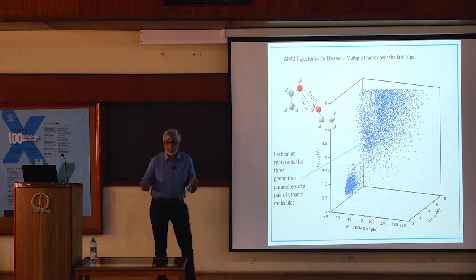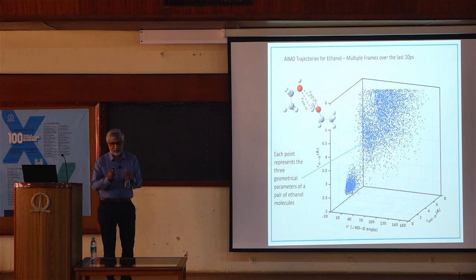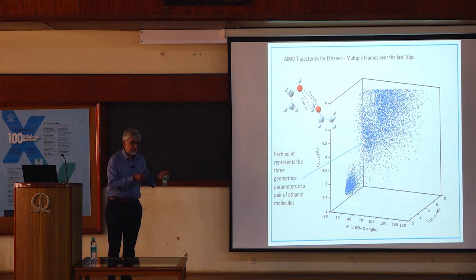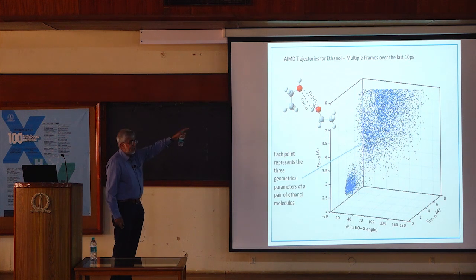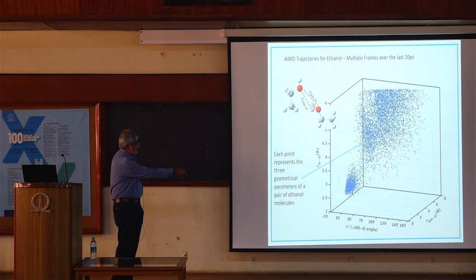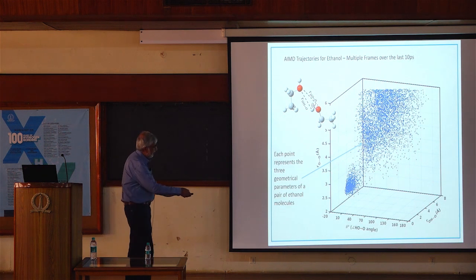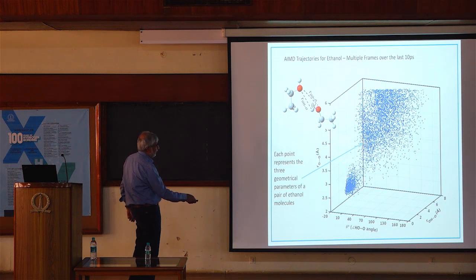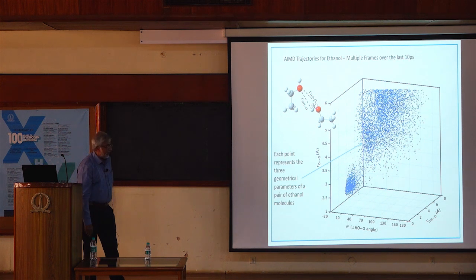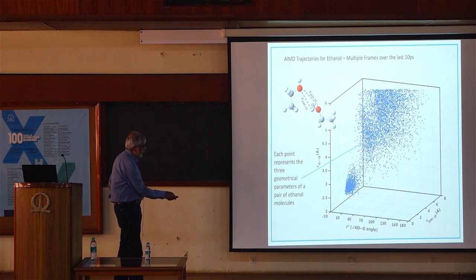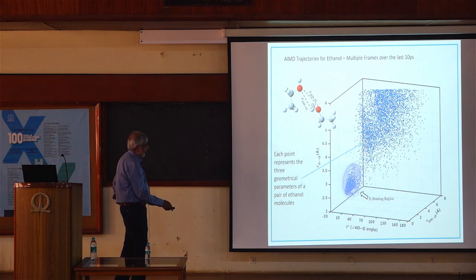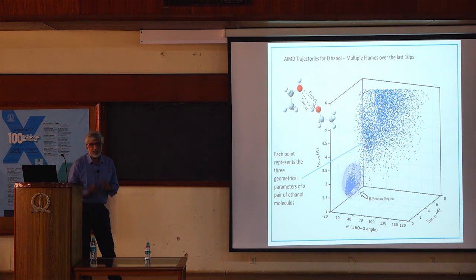We run our MD simulations and from these simulations we pick up pairs of ethanol molecules — or propanol or butanol pairs for those systems — and measure the three geometrical parameters. Each point represents these three coordinates of a pair of molecules. There is a clear separation in the scatter plot: a region of short distances and short angles that we identify as the hydrogen bonding region.